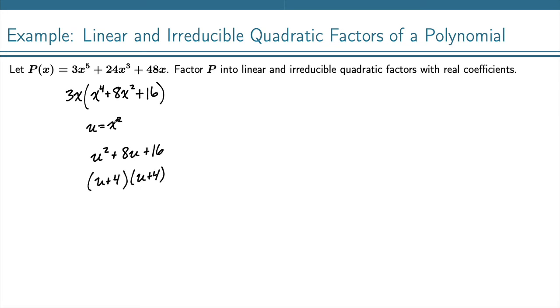In other words, if we replace u with x squared, we have x squared plus 4. Since this is the same thing twice, that's squared. We still have that 3x out in front.